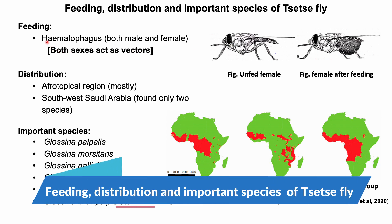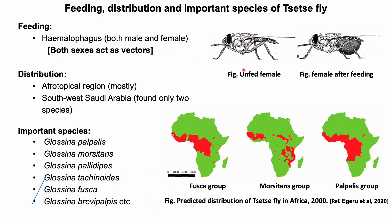Feeding of tsetse flies: both male and female are hematophagous, so both sexes can act as vectors of different diseases. Tsetse flies are distributed mostly in the Afrotropical region. Here you can see the distribution of major groups of tsetse flies in the African continent. The important species of tsetse flies are also listed here.